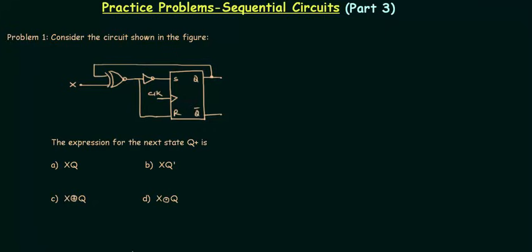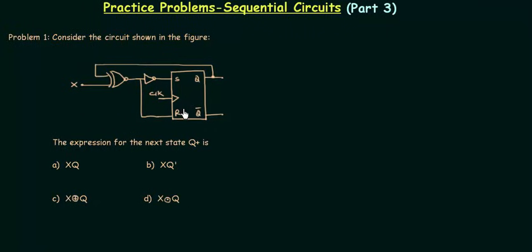Consider the circuit shown in figure. We are having SR flip flop, NOR gate, XNOR gate, and we have to find out the expression for the next state Q+. There is one very important point that you should note: whenever we have to find out the expression for next state, we have to make the characteristic table.